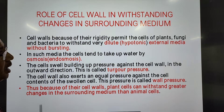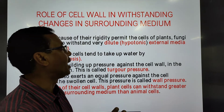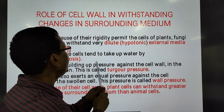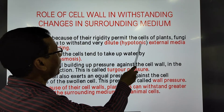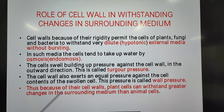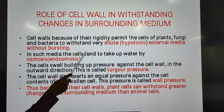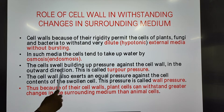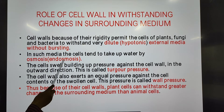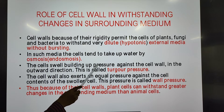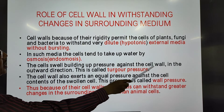Because of the rigidity of the cell wall, plant cells, as well as cells of fungi and bacteria, can withstand very dilute or hypotonic external media without getting burst. In such media, cells take up water by osmosis — that is, by endosmosis — and the cells swell, building up pressure against the cell wall.